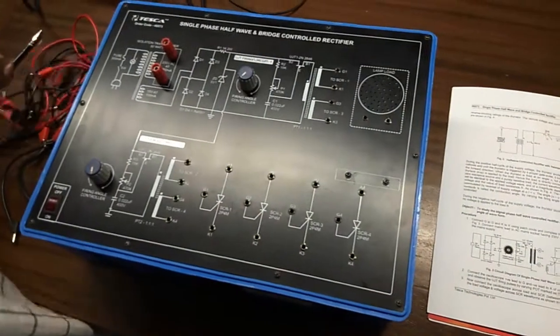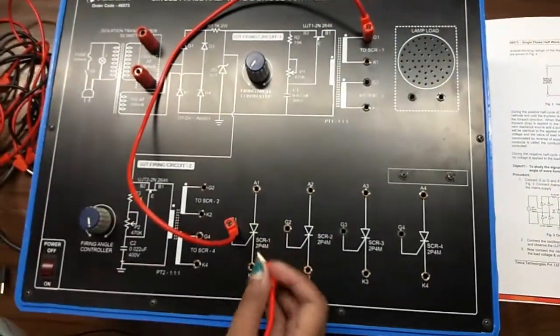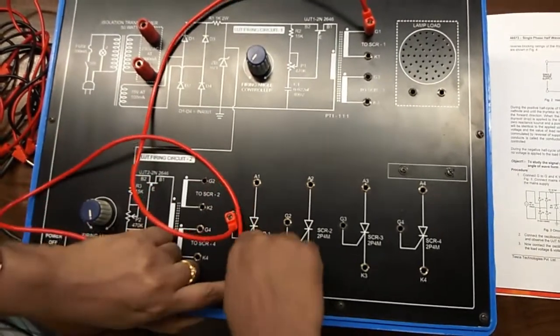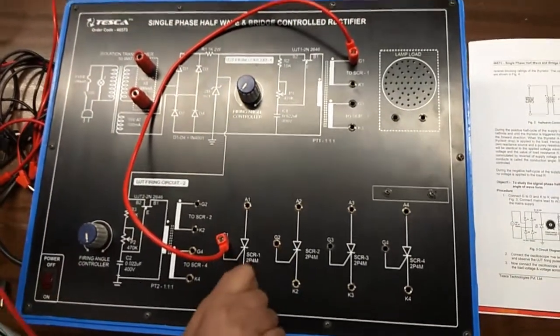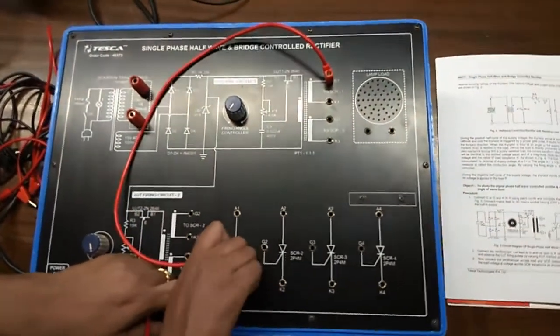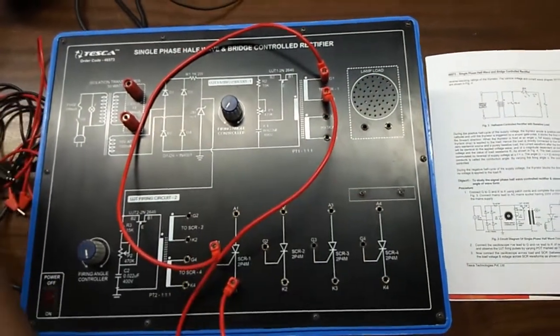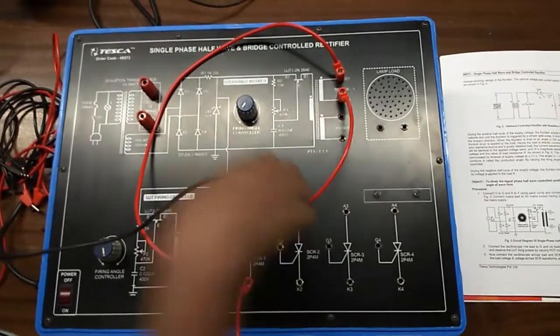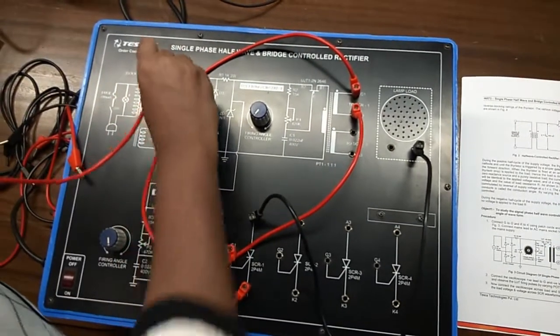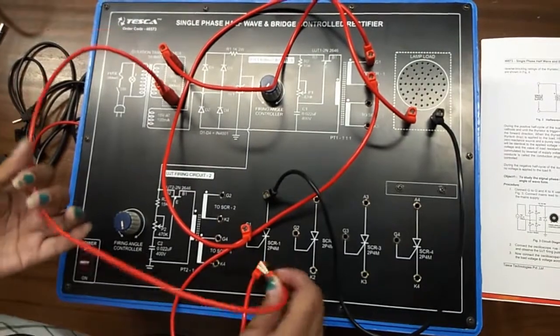First connect G to G and K to K. Now, connect the anode of SCR here with the lamp load and connect this power supply here and connect this with the cathode of the SCR.